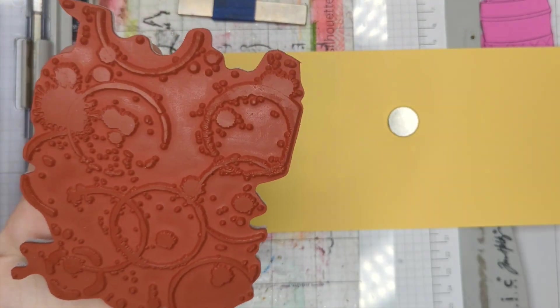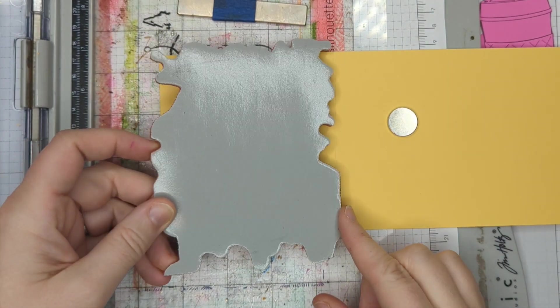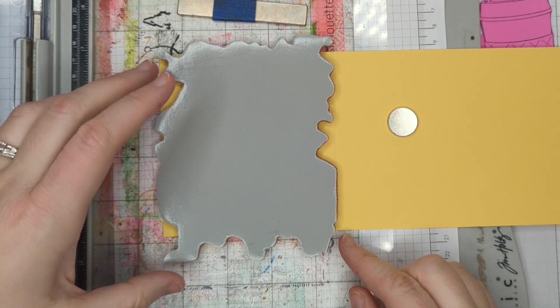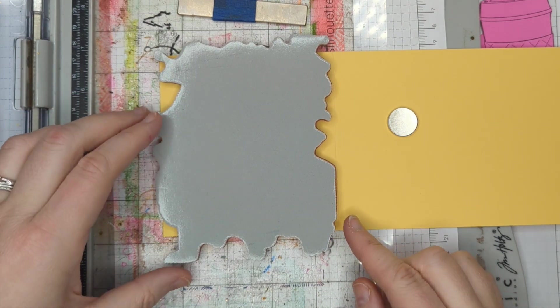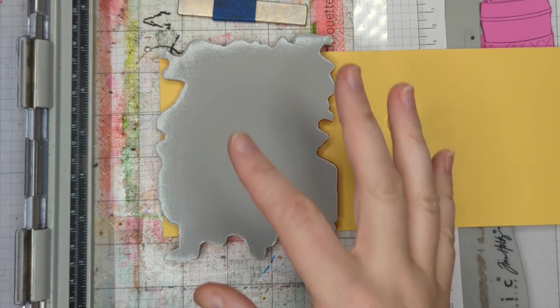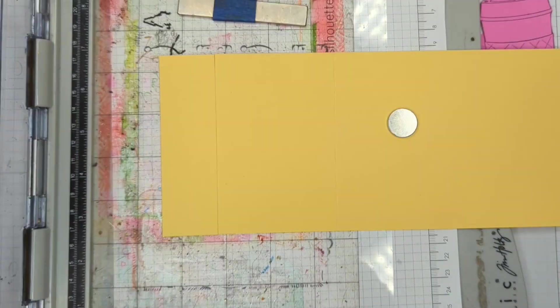So here's my background stamp that is just a bunch of coffee spills or coffee rings, and I'm going to line the edge of my background up with the score line of my card. Now this background stamp almost comes to the edge, which is fine. We're going to play with that a little bit.